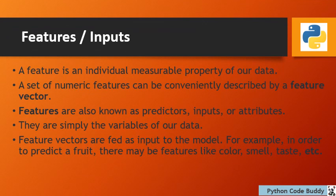A bit more detail on features. A feature is an individual measurable property of our data. A set of numeric features can be conveniently described by a feature vector. Features are also known as predictors, inputs, or attributes, and they are simply the variables of our data. Feature vectors are fed as inputs to the model.